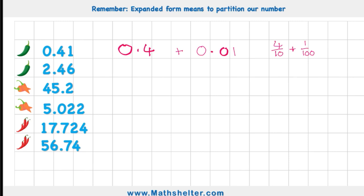Let's have a look at the second green chilli challenge, 2.46. Well, I'd have 2 as my whole number. I'd add that to 4 tenths, which would be 0.4. And I'd add that to 6 one hundredths, which is 0.06. Or in other words, I'd have 2 whole, 4 tenths, and 6 one hundredths. And I'd add those all together.